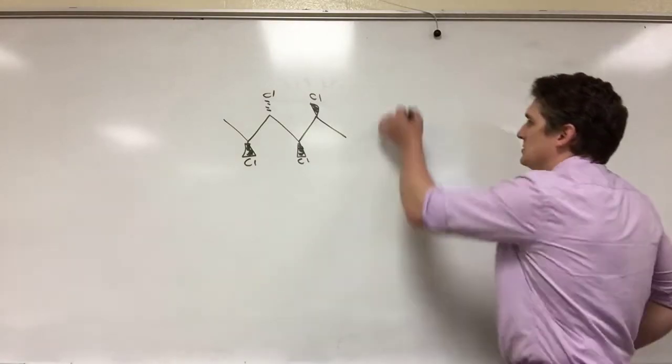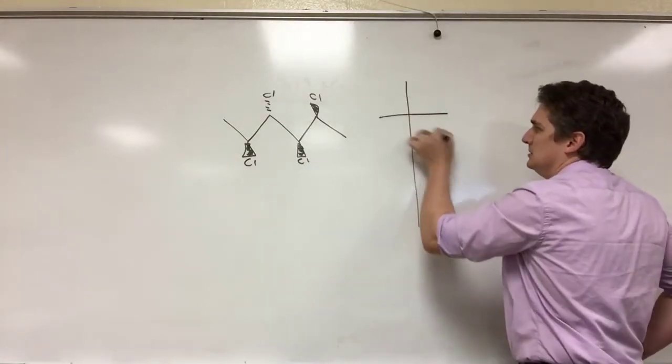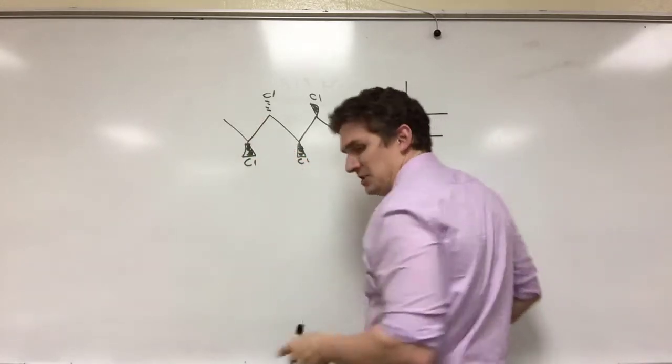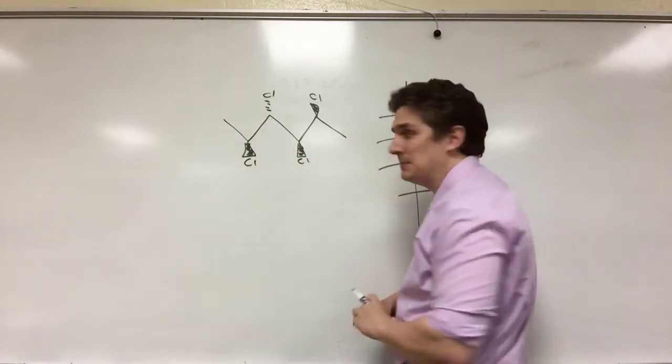If we look at a Fisher Projection, so we draw it out here: one, two, three, four. So I've got carbons on each end. In this case they're blue in my model. I'll pick it up in just a minute.